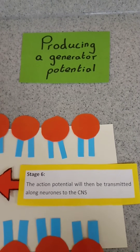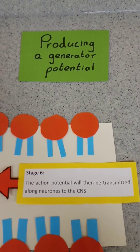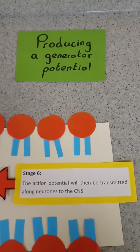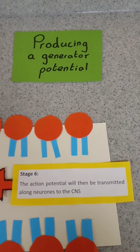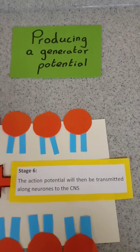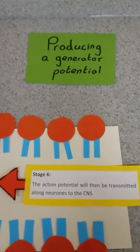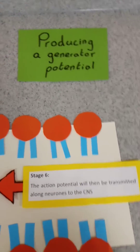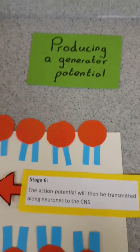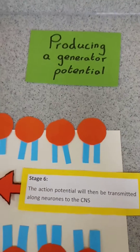We're just going to have a quick look at how a generator potential is produced. First off, we need to remember that generator potentials are produced in sensory neurons.